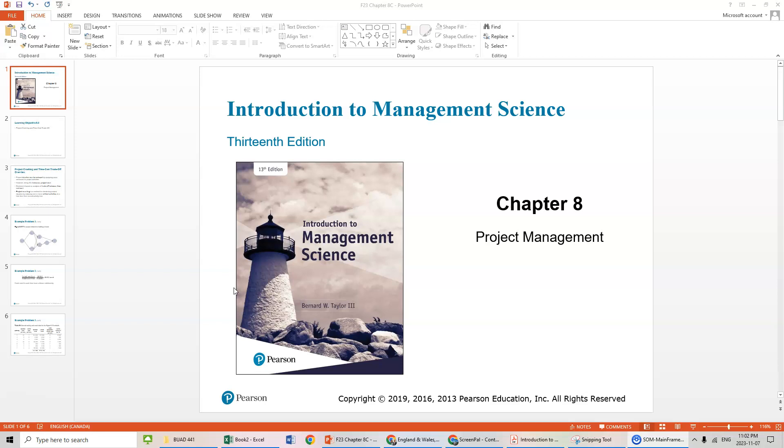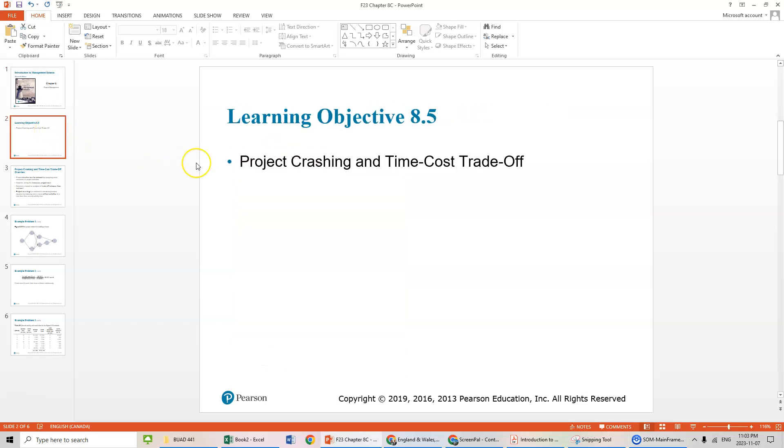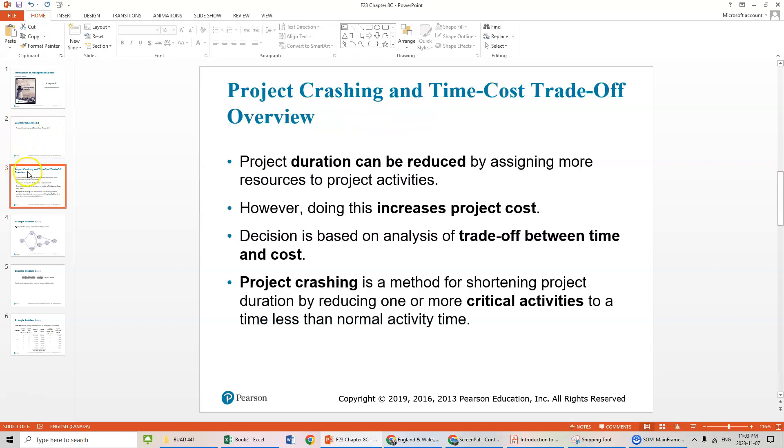Obviously if we shorten the project time it's going to incur costs. So in this section we're looking at various activity costs. There's a time cost trade-off. You want less time it's going to take more money. As it says, project duration can be reduced by assigning more resources to project activities.